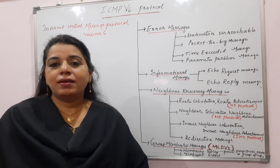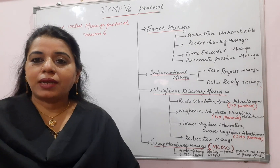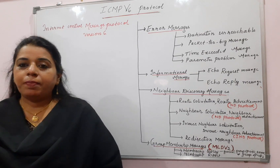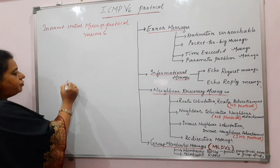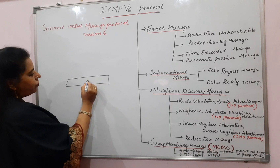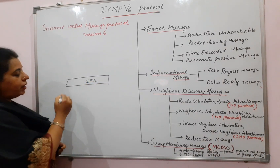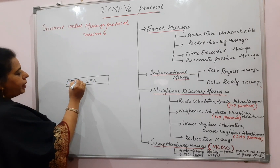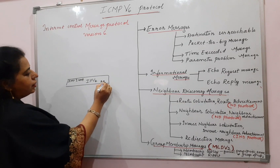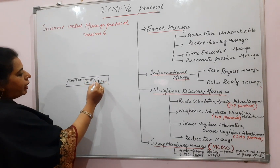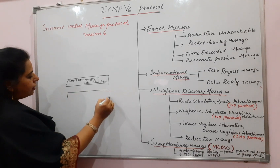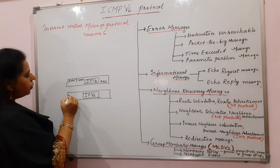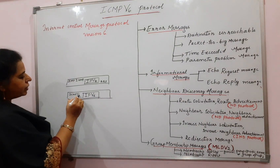Now for IPv6, the protocol that supports IPv6 is ICMPv6. If you recall the TCP/IP protocol stack, for IPv4 at the network layer you would have seen there are supporting protocols: ICMP, IGMP, and ARP. But if the internet protocol at the network layer is version 6, you can see only one protocol here - ICMP version 6.